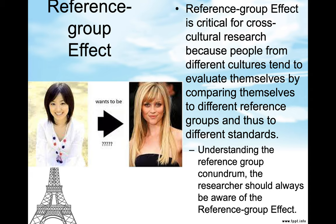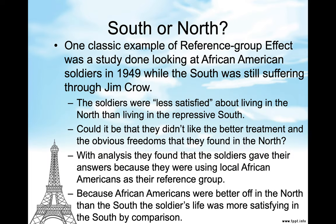Researchers should always be aware of the reference group effect. One classic example was a study of African American soldiers in 1949 while the South was still suffering through Jim Crow. The soldiers were less satisfied about living in the North than living in the repressive South. With analysis, they found that the soldiers gave their answers because they were using local African Americans as their reference group. Because African Americans were better off in the North, the soldiers' life was more satisfying in the South by comparison.